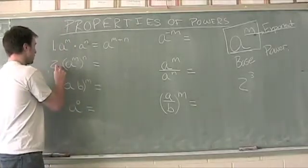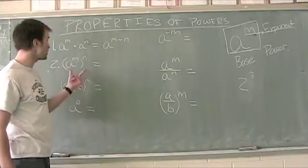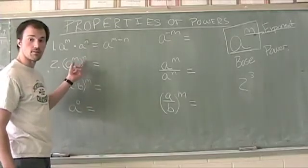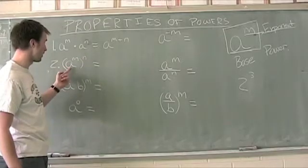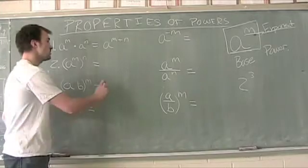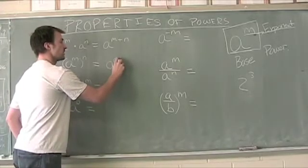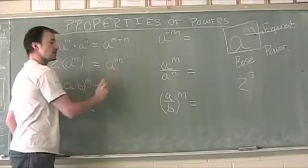In property number 2, we've got a to the m to the nth power. This is known as a power of powers. n is the power acting on the power that already exists of a to the m. When you have a situation like this, we multiply our exponents together. So this becomes a to the m times n power.